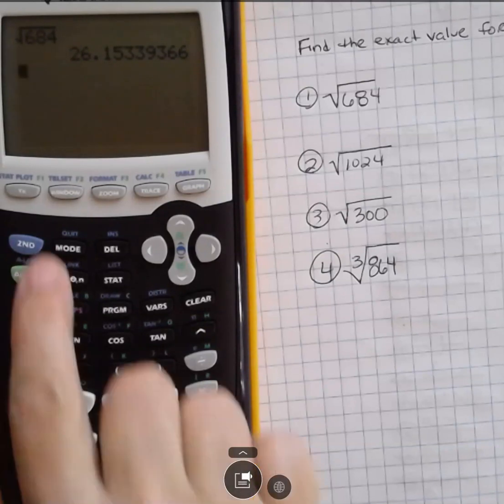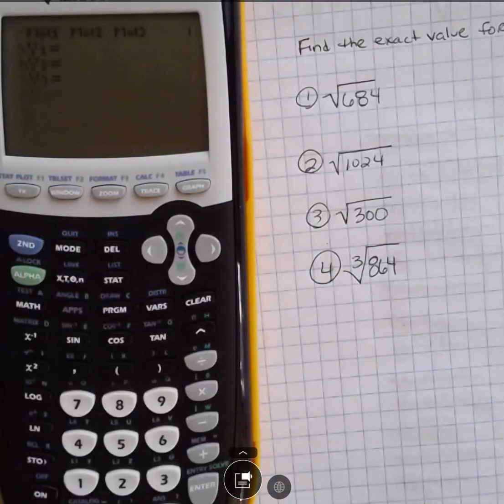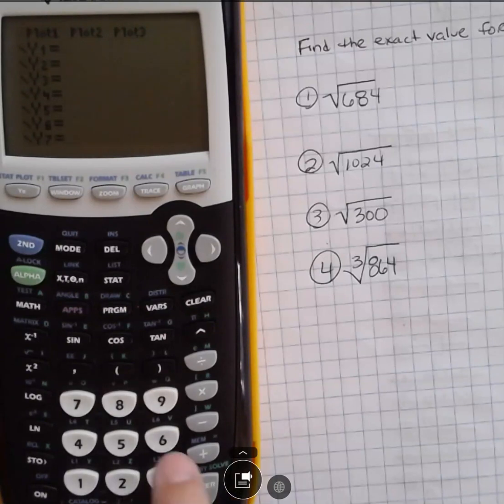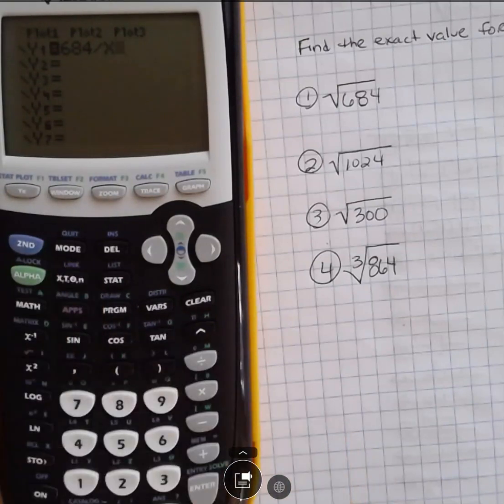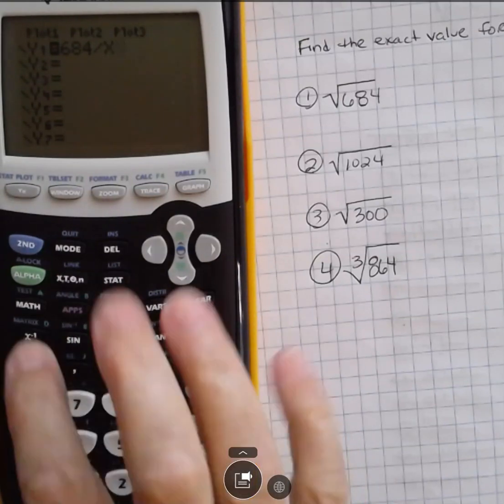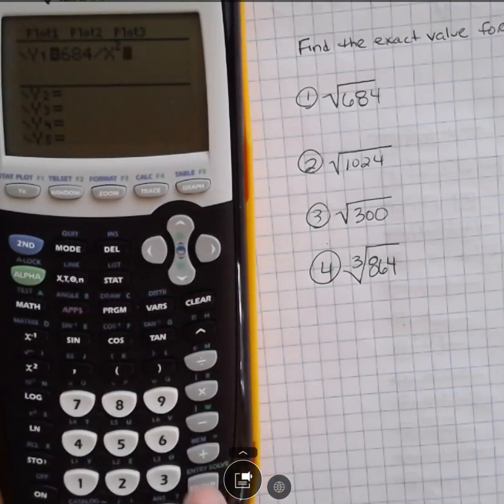So to do that, what you're going to do is go to y equals up here and put in the number 684 and then put in divided by, and then use this button here to put the x and then you want to the second power because we're looking for the square root or second root here.